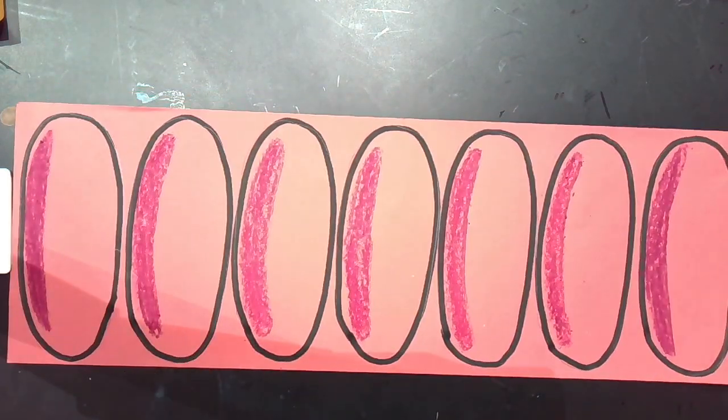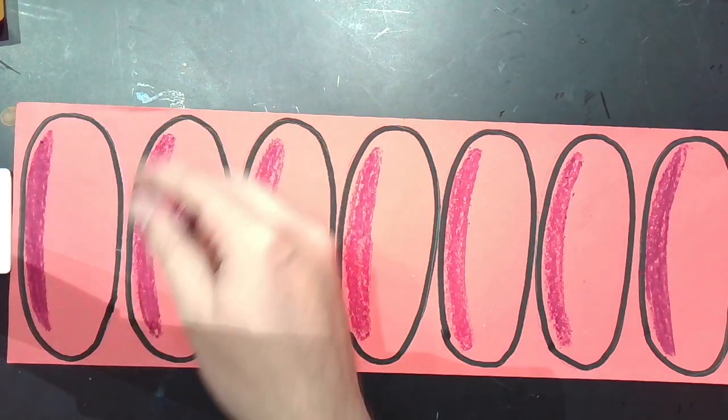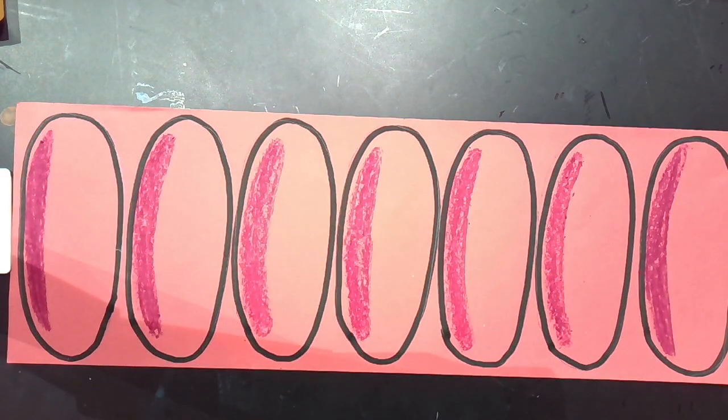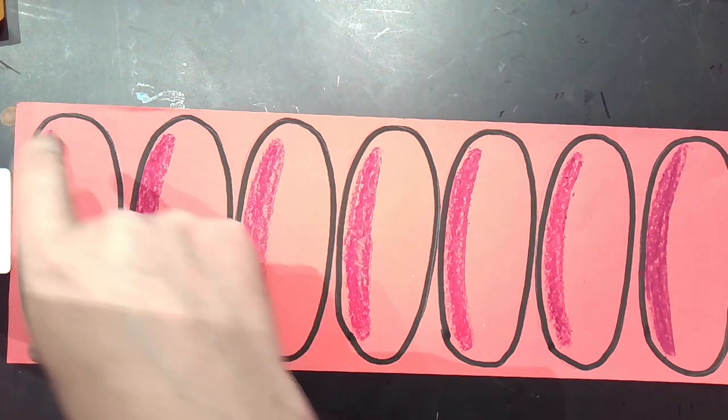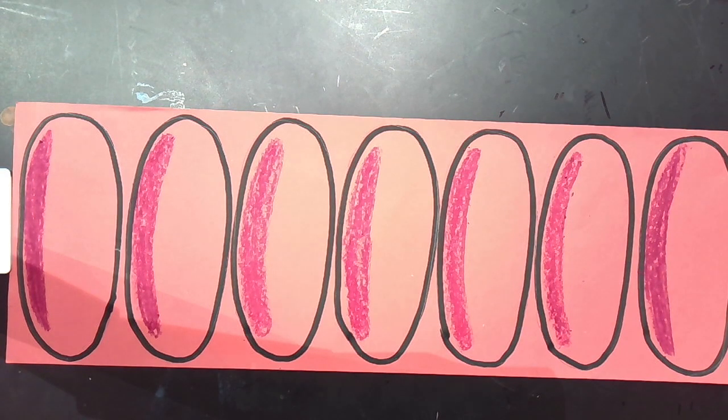There we go. So now I have seven oval shapes with a darker color on all of them. So your next step is going to be to take a white crayon and do the same thing on the other side. So I'm going to grab my white crayon and I'm going to do that and I'll see you in a second.